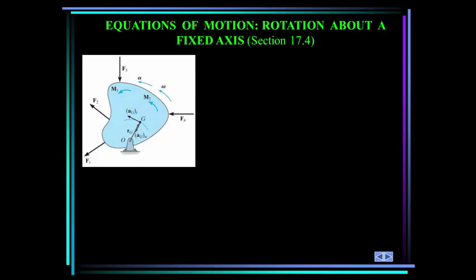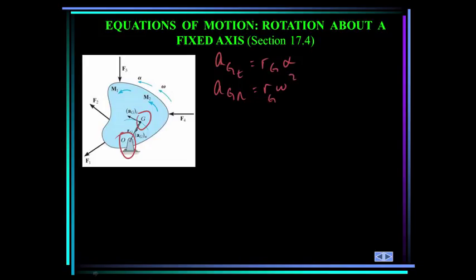When a rigid body rotates about a fixed axis perpendicular to the plane of the body at point O, the body's center of gravity G moves in a circular path about O. Thus, the acceleration of point G can be represented by a tangential component, A_G(tangential) = R_G * alpha, and a normal component equal to R * omega squared. R_G is the vector from point O to point G. Since the body experiences an angular acceleration, its inertia creates a moment of magnitude I_G * alpha equal to the moment of the external forces about point G.